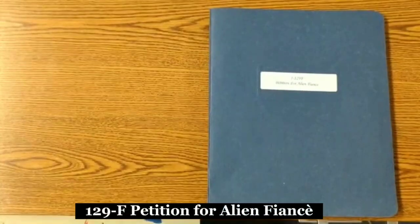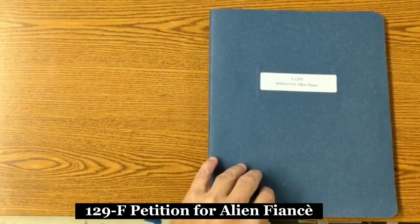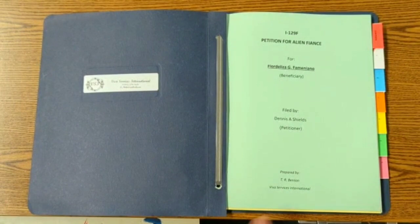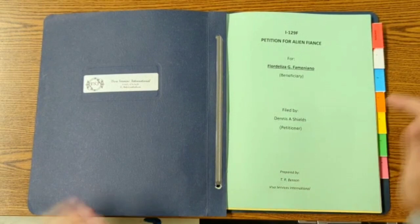So here is our I-129F petition for Alien Fiancé. This is our K-1 visa application packet. When you open this up, it gives Floor's name as the beneficiary, my name as the petitioner. And at the bottom, we actually hired somebody to help us put this together, Tim Benson. We'll get into his information in a moment, but let's run through the packet.